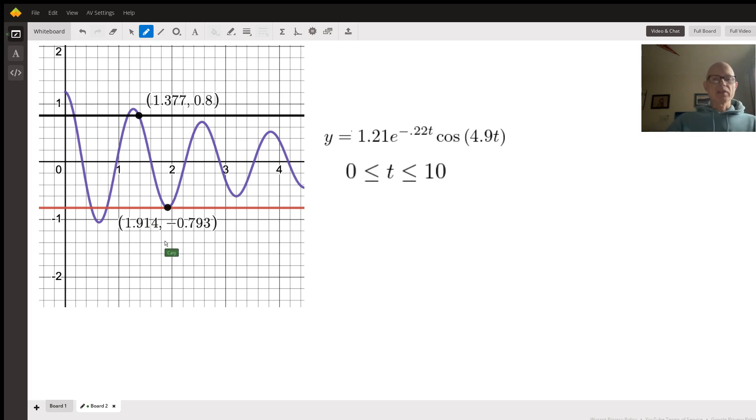This, by the way, is a Desmos graph and just a snapshot from that. So there we have it. 1.377 seconds approximately is the last time that this oscillating object, the weight, will be that far from equilibrium.